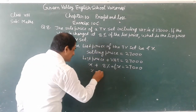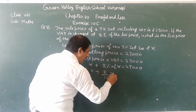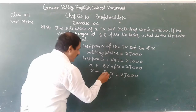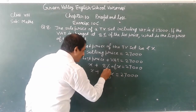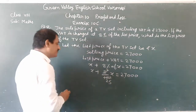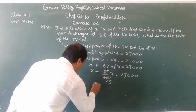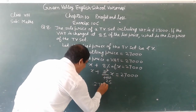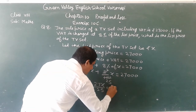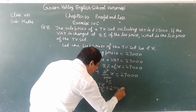X plus 8 upon 100 into X is equal to 27,000. Now you can simplify: 100 plus 8 over 100 gives us 27X upon 25 is equal to 27,000.